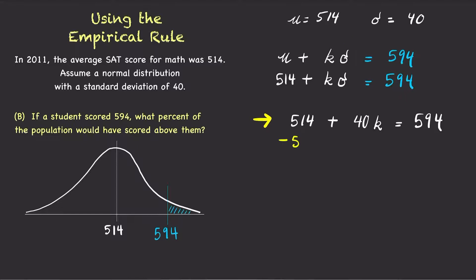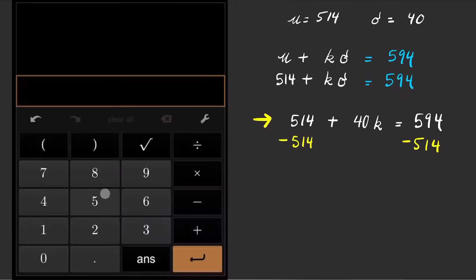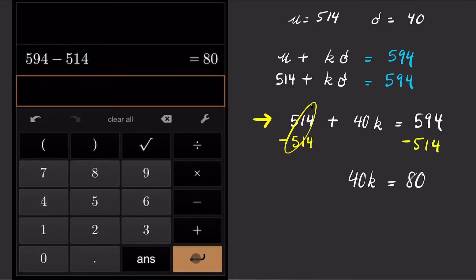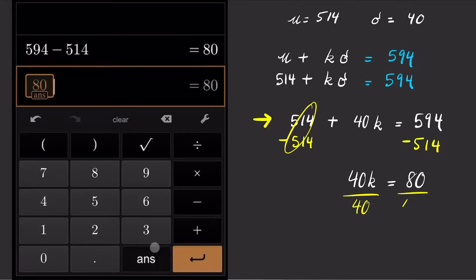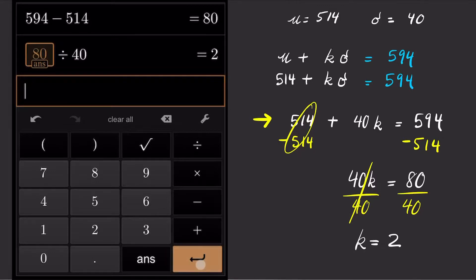To solve for k, first subtract both sides by 514 and we have 40 times k equals 80. Now, divide both sides by 40 and we have k equals 2.